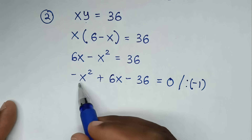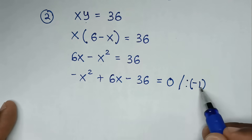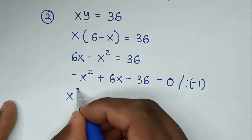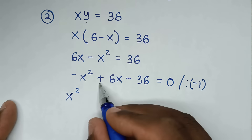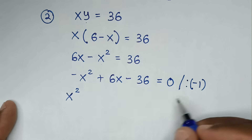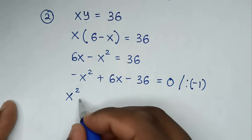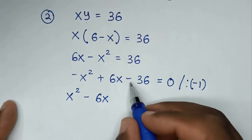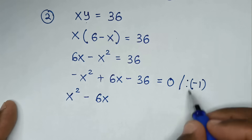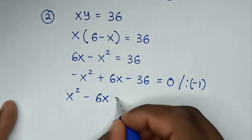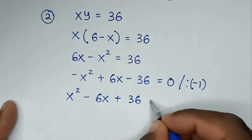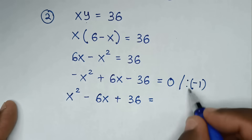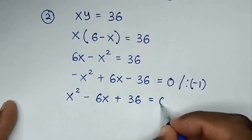So negative x squared divided by negative 1 is positive x squared. Positive 6x divided by negative 1 is minus 6x. Minus 36 divided by negative 1 is positive 36, equal to 0.